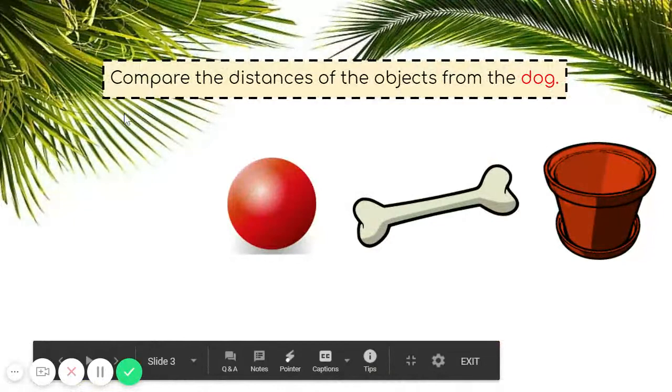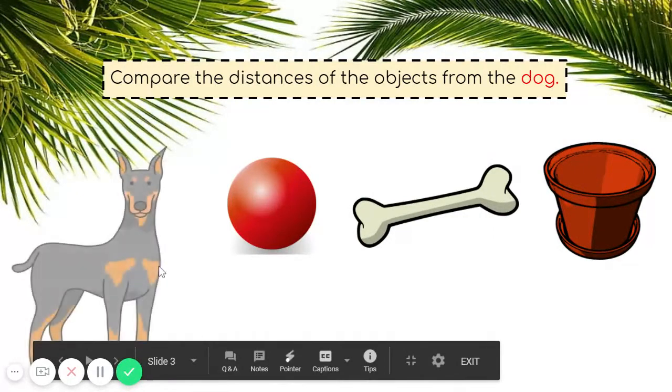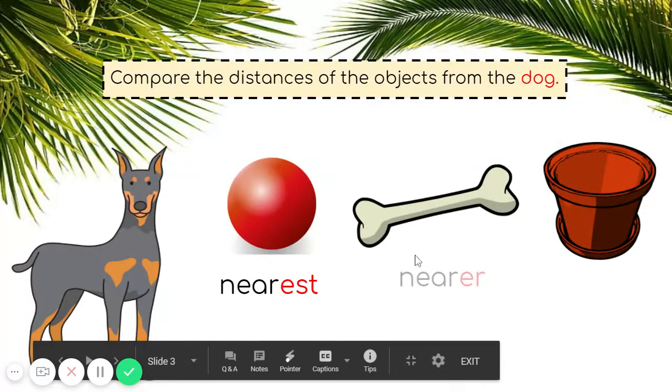So here, let's compare the distances of the objects from the dog. So where's the dog? Here's the dog. So the ball is nearest to the dog, the bone is nearer, and the pot is near to the dog.